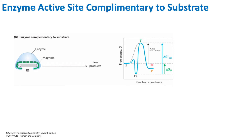We can see that this is our delta G uncatalyzed, which we saw previously, but now this is the entirety of delta G catalyzed. We might think: what is the point of an enzyme if it's increasing our delta G? Well, this is because it is more efficient for an enzyme to actually be complementary to the transition state instead of the substrate, and we'll take a look at that in just a second.